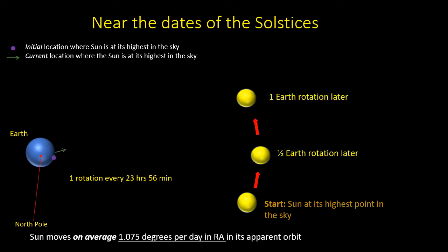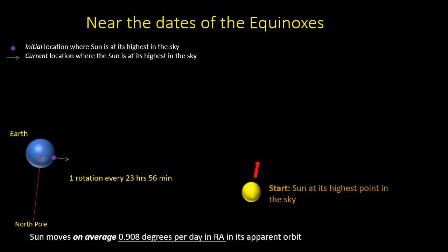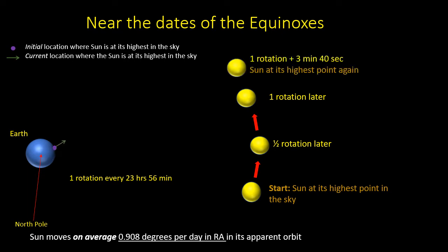Around the time of the solstices in June and December, when the right ascension of the Sun is changing fastest in its apparent orbit, it takes slightly more than one rotation plus four minutes for the Sun to be at the highest point in the sky the following day, so the solar day is slightly longer than 24 hours. Around the time of the equinoxes in March and September, when right ascension is changing slowly, it takes slightly less time, so the solar day is slightly shorter than 24 hours. This graph shows the variation in the length of the solar day if the Earth's axial tilt were the only factor.